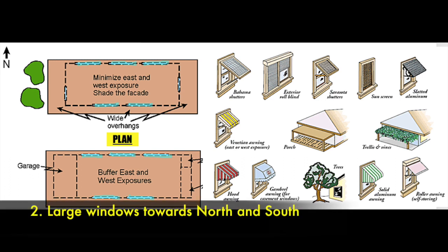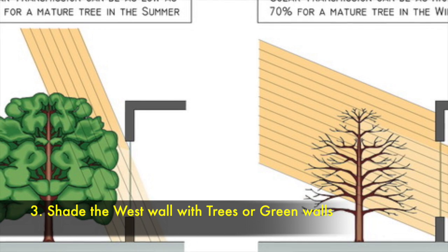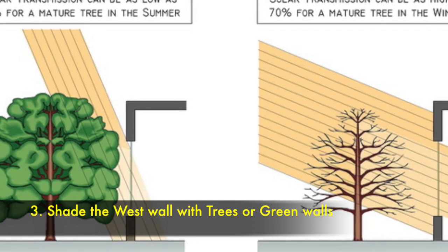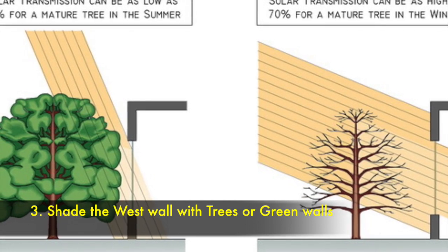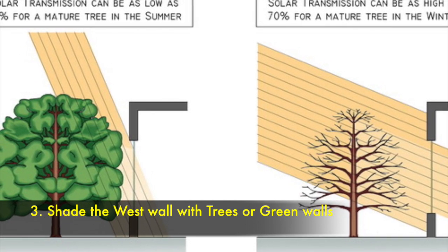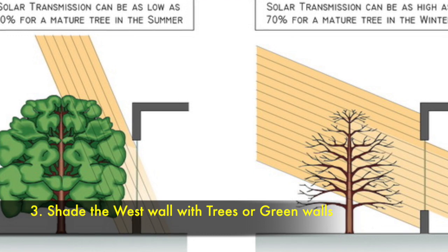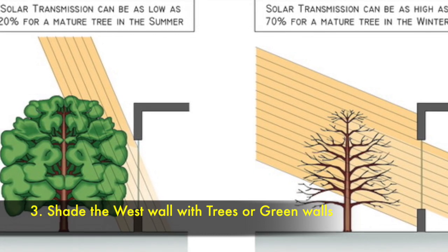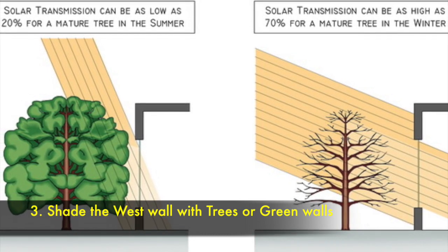The second one is provide larger window openings towards north and the south. The third one is make sure the west side is shaded by trees or green walls, because this will reduce the sun's radiation from the west side.